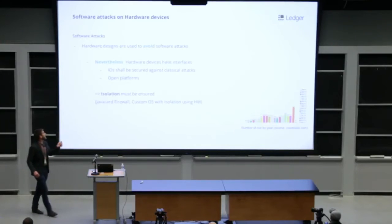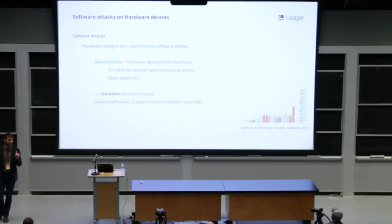First kind of attacks are software attacks. We design hardware in order to avoid software attacks. But even hardware design of interfaces, IO. So when there are IO, there are potential software attack vectors. Like buffer overflow, null pointer dereferencing, and so on.